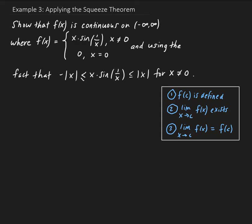Looking at our piecewise function, we have x times sine(1/x). We know this is continuous everywhere except x equals zero — it's continuous on its respective domain, from minus infinity to zero and from zero to infinity. For the second part of the function, when x is zero it equals zero, so that's just a coordinate. The real question here is what is happening at zero.